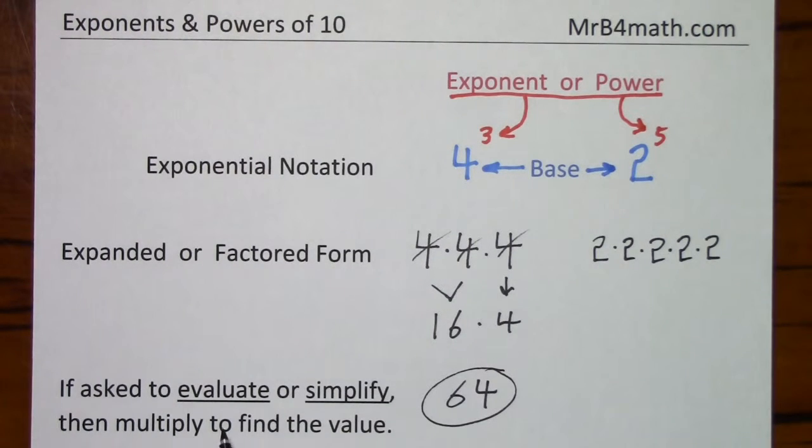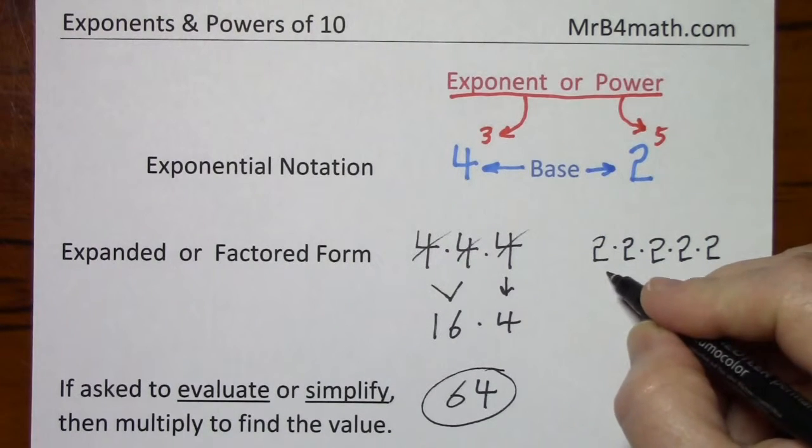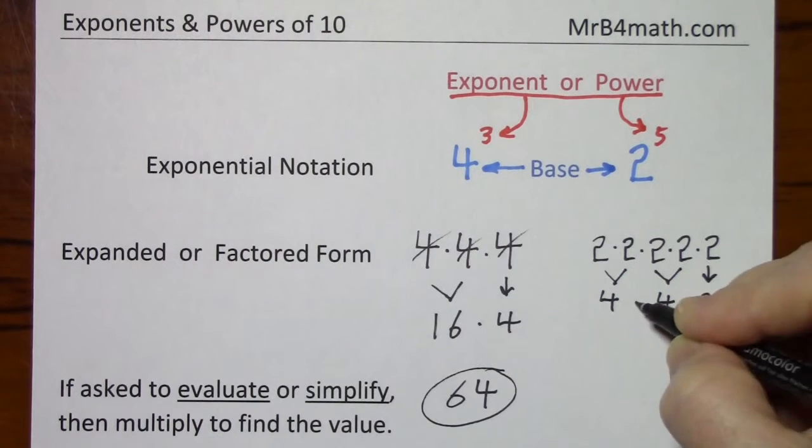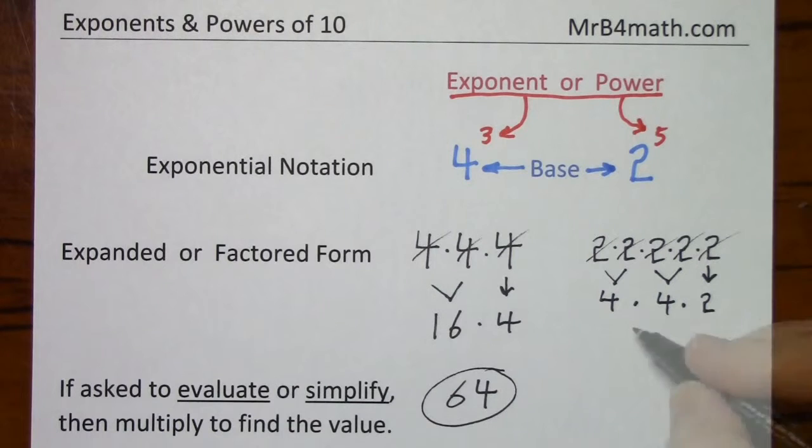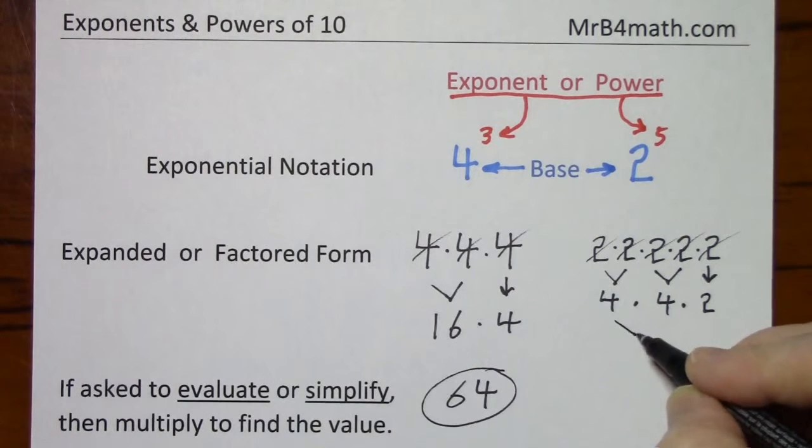And if we want to evaluate or simplify, we multiply all these. So I've used all these up. Now, at this point I can multiply in any order, thanks to commutativity of multiplication. I'll just proceed from left to right.